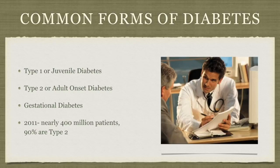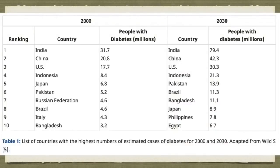There are four basic types of diabetes: type 1 or juvenile diabetes; the most common, type 2 or adult onset diabetes; gestational diabetes; and diabetes secondary to other conditions such as pancreatitis or drugs. In 2011, nearly 400 million people worldwide had diabetes and 90% were type 2. The top three countries now and predicted in 2030 are India, China, and the United States. Good diets and public health education tend to decrease the rates of diabetes.